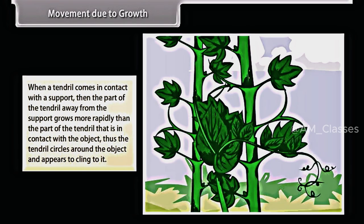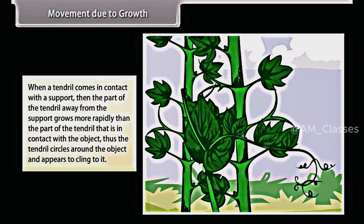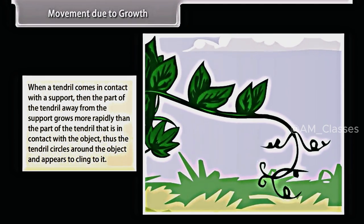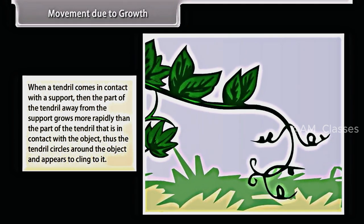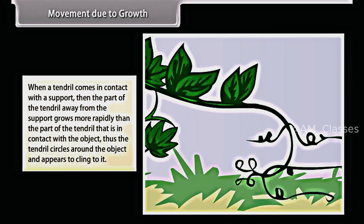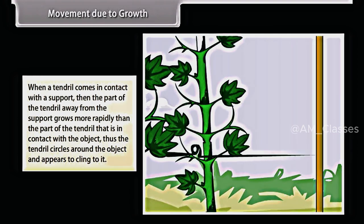When a tendril comes in contact with a support, the part of the tendril away from the support grows more rapidly than the part in contact with the object. Thus the tendril circles around the object and appears to cling to it.